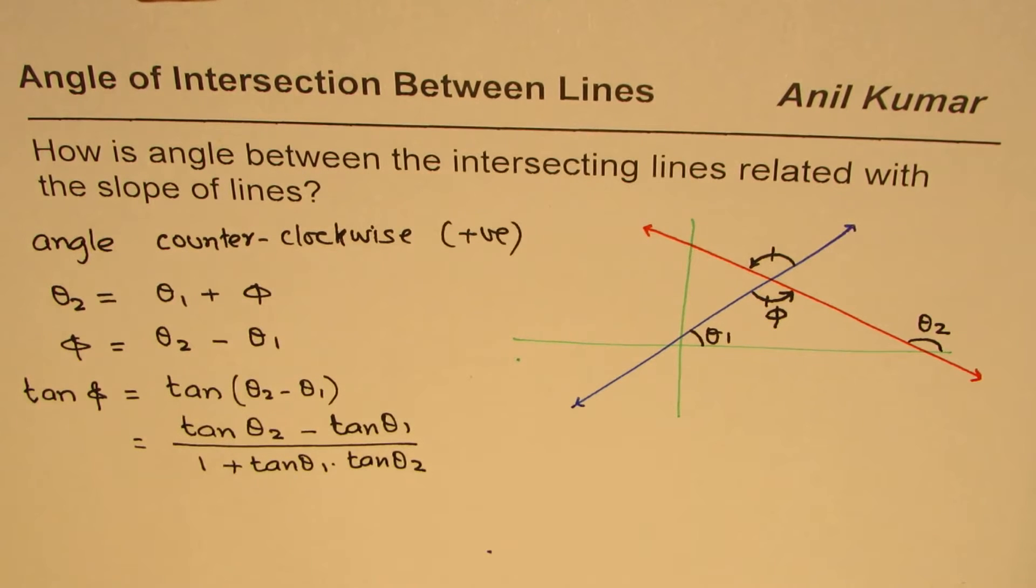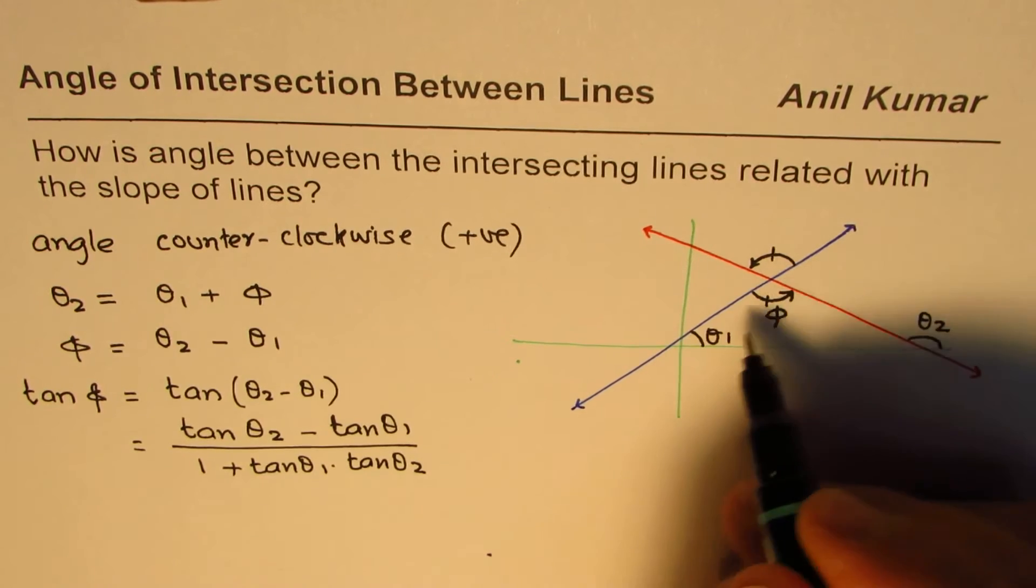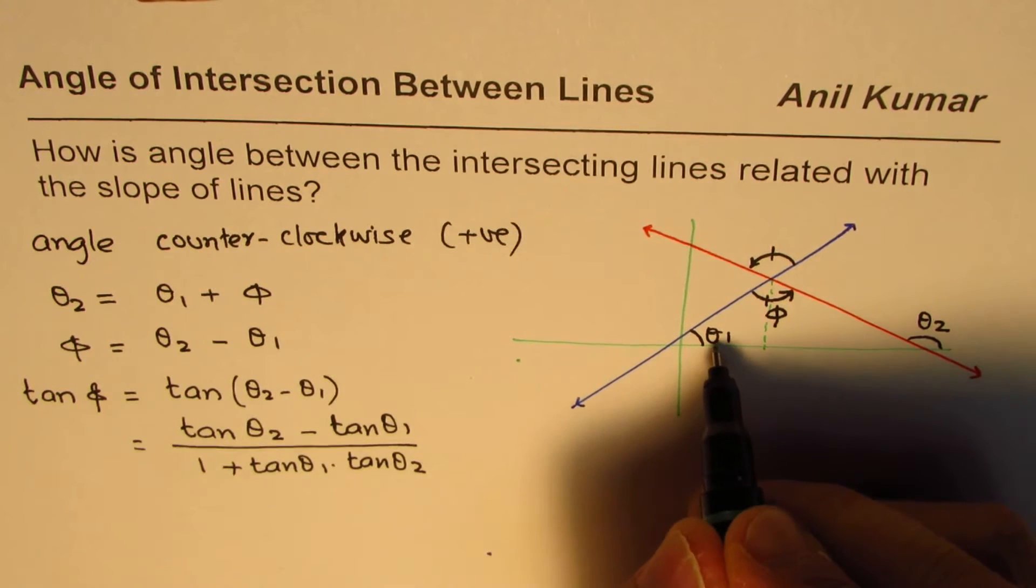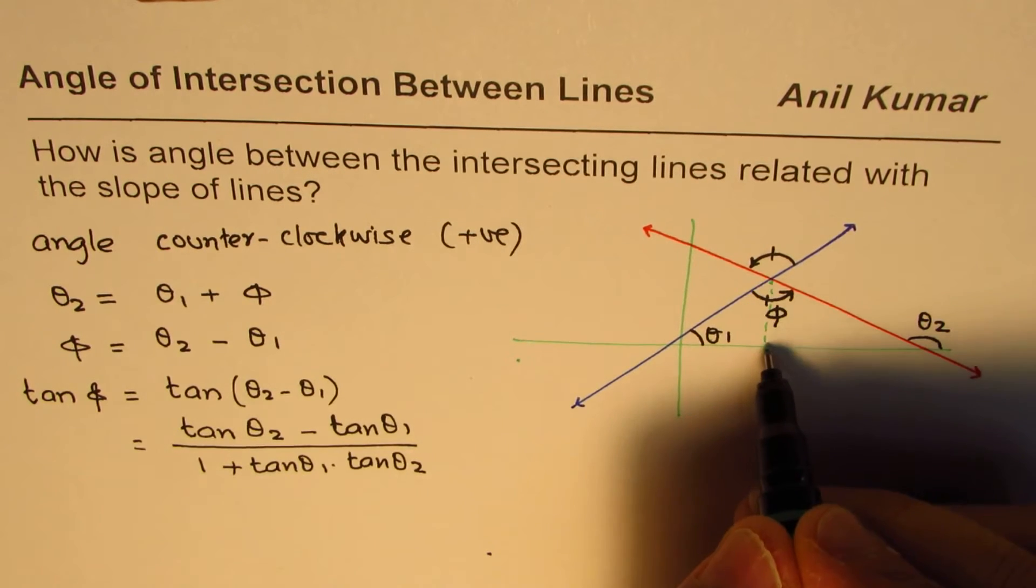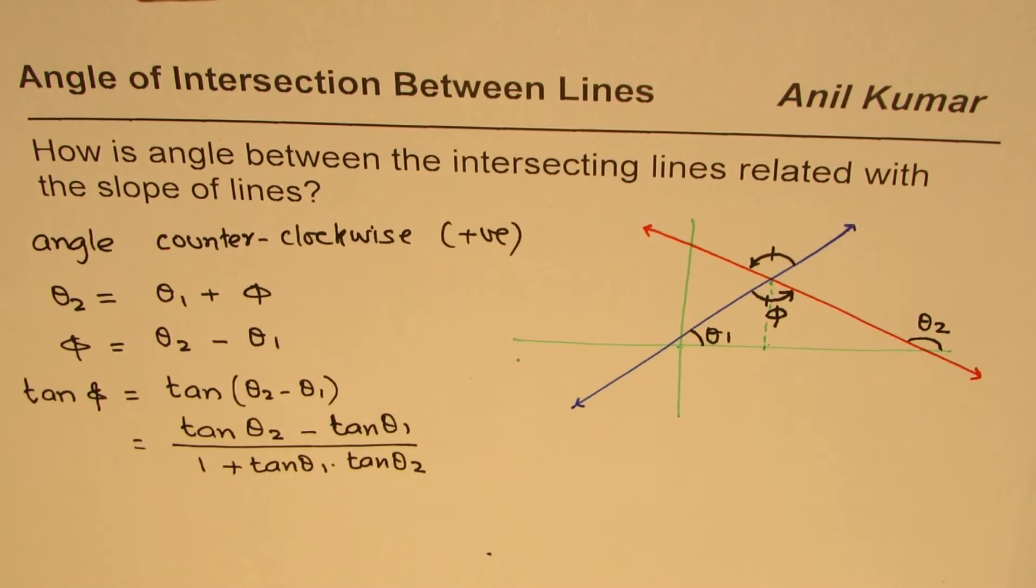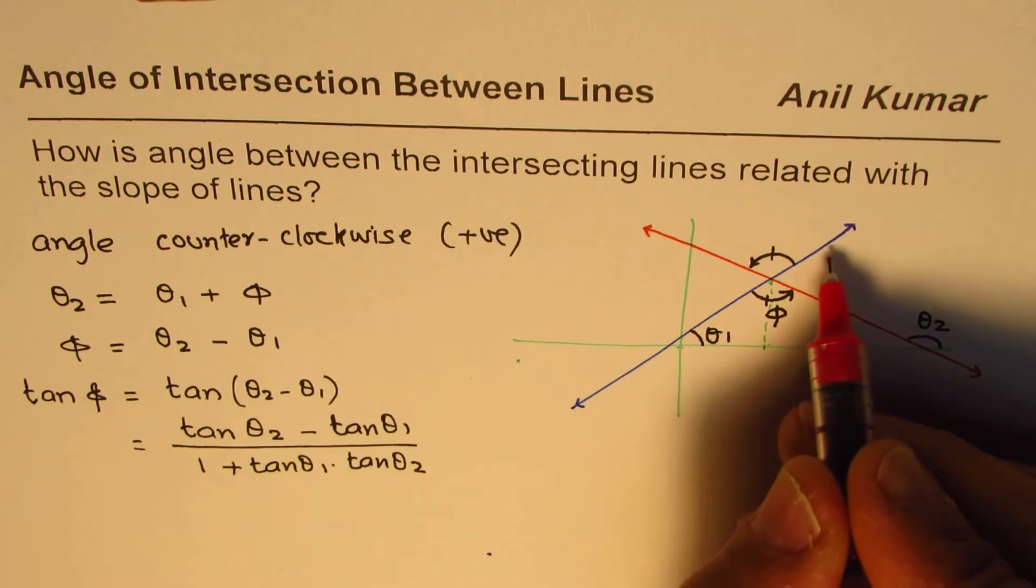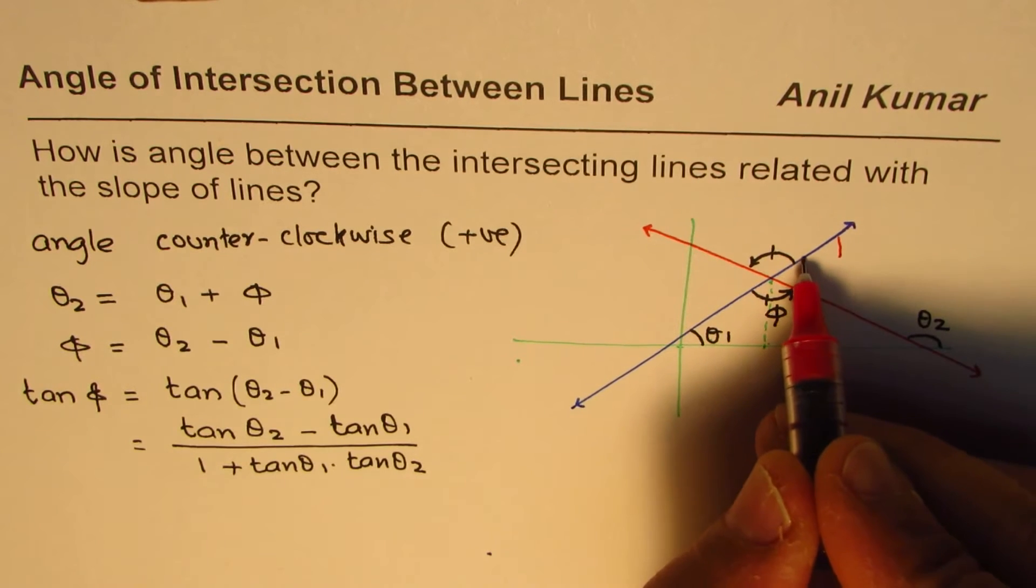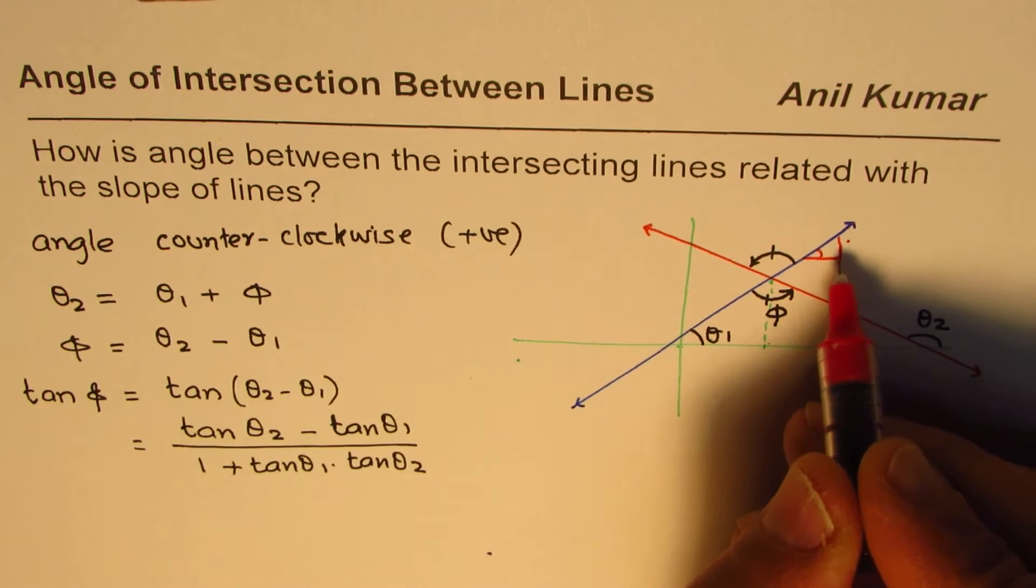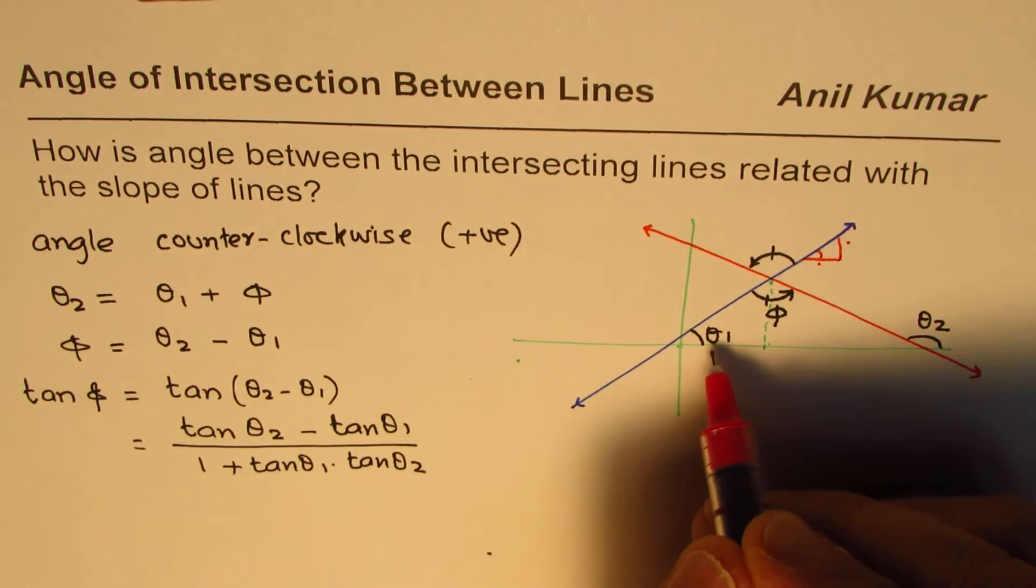Now what is this tan theta 1 and tan theta 2? Let us try to understand that part also. So if you consider this particular line, let us say the blue line, if I drop a perpendicular here then tan is perpendicular over base and that is rise over run. So let me just sketch one here, small angle kind of like this.